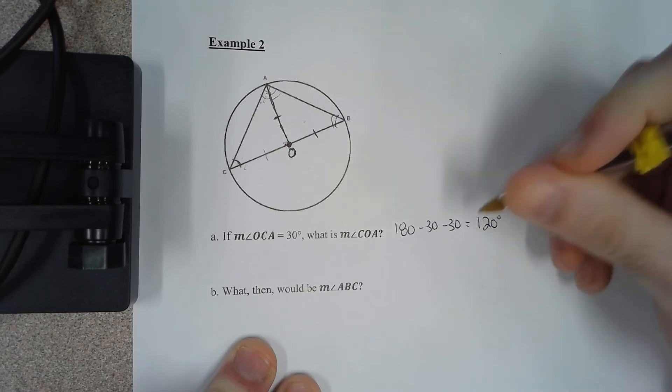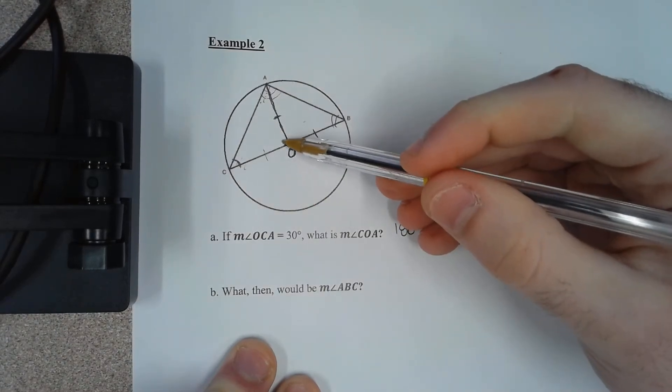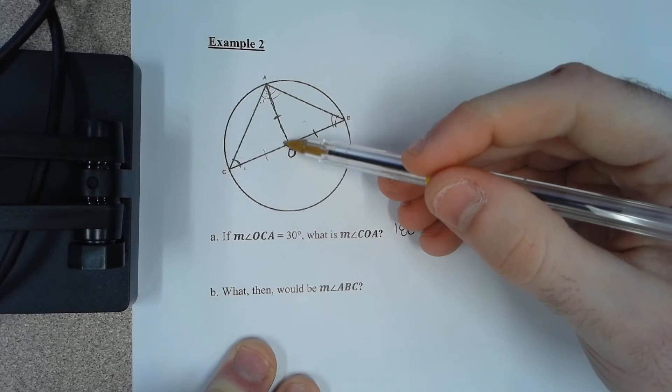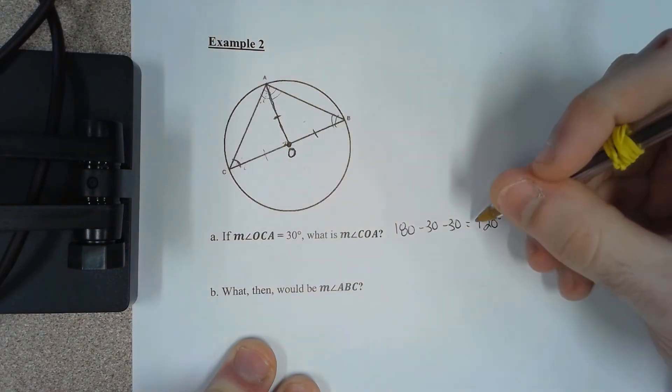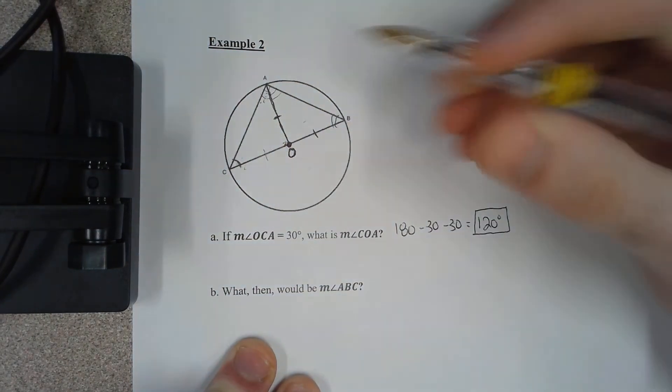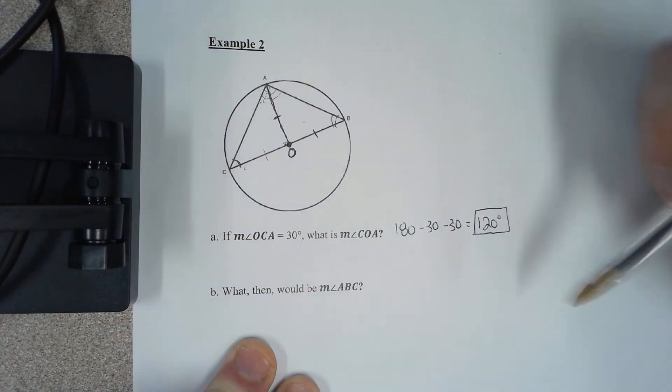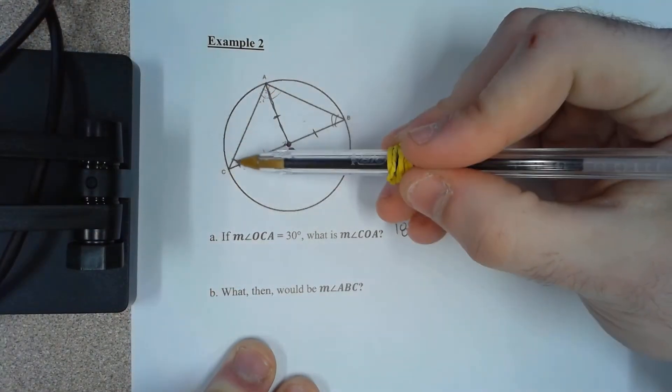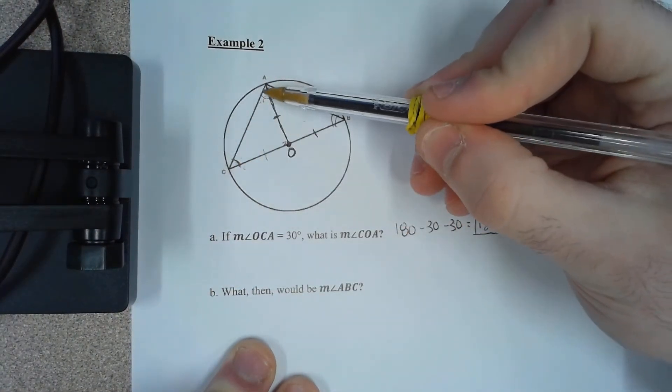And that's not drawn to scale. This isn't actually 100, this is probably pretty close to 90 degrees, but this is not drawn to scale. This is just an example. So the measure of COA is going to be 120 degrees if this is 30 and if that was 30.